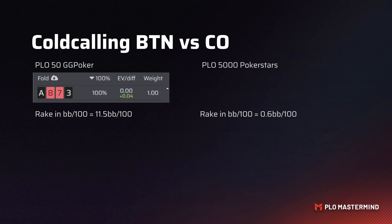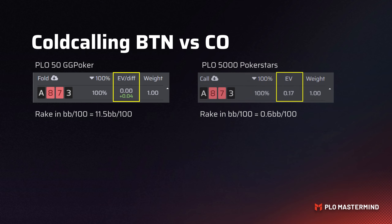Take ace-8-7-3 double suited as an example. This hand is a fold on GG Poker PLO 50 at equilibrium — calling would cost about 0.04 big blinds per hand, or four big blinds per 100, making it a fringe hand you might add against a weaker opponent but a fold at equilibrium. On the right side at the lower rake structure, the exact same hand ace-8-7-3 is now a call.